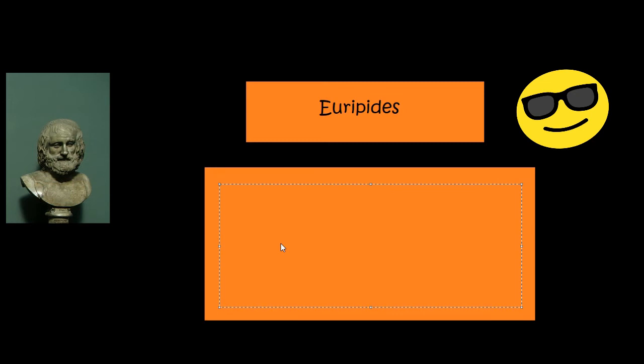Perhaps he was unpopular because he questioned the norms in his day. His characters would criticize the gods. And, as we said before, Euripides portrayed people just as they are: flawed and imperfect.